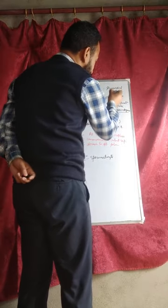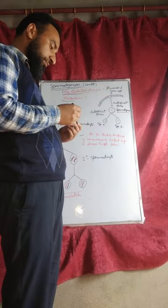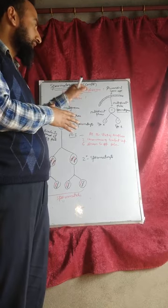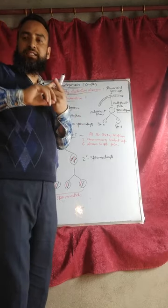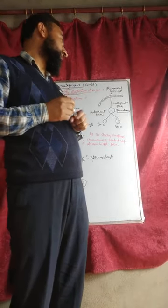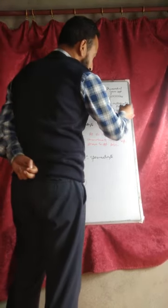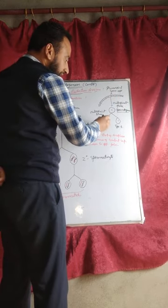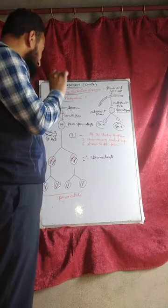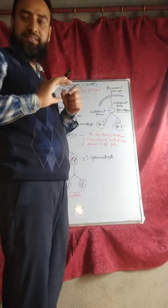The primordial germ cell of the germinal epithelium enters into a multiplication phase. In the multiplication phase, it multiplies — it undergoes repeated mitotic divisions to form a large number of spermatogonia. Two types of spermatogonia are formed: type A spermatogonia and type B spermatogonia.